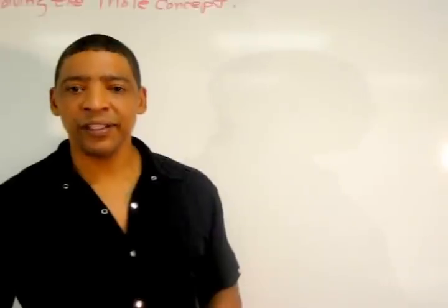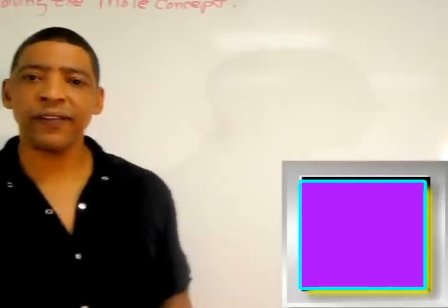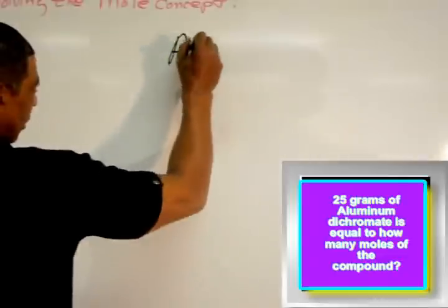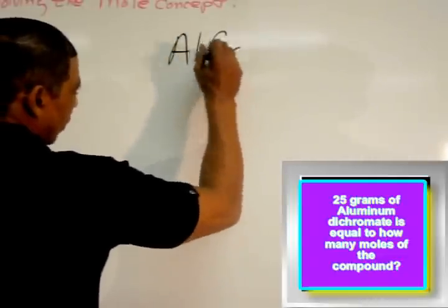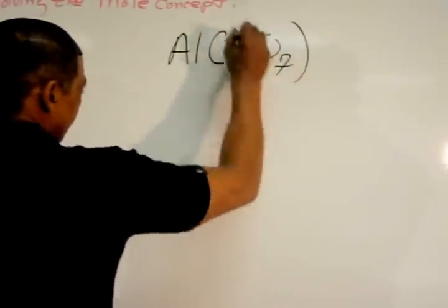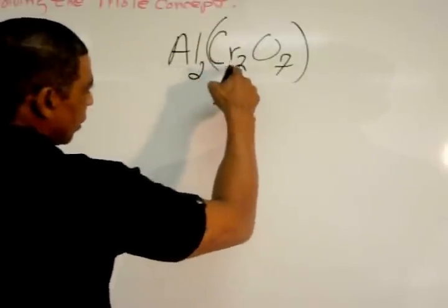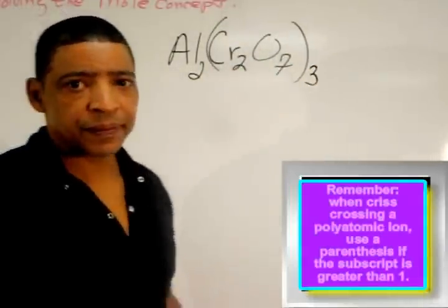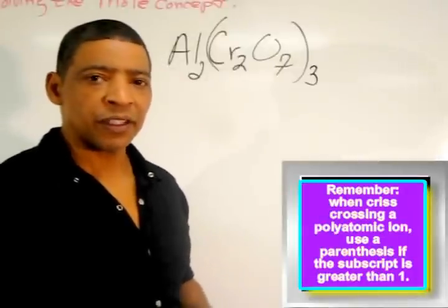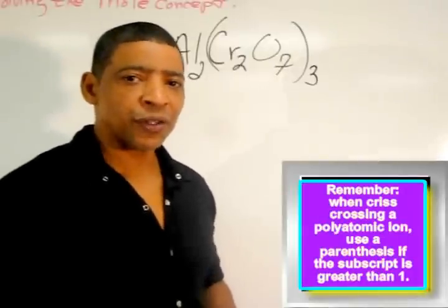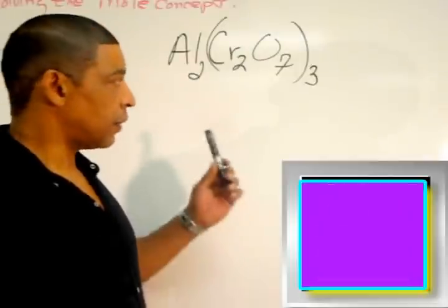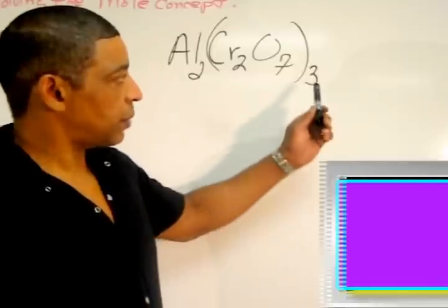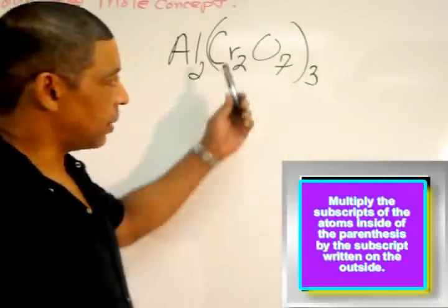Now let's determine the number of moles contained in 25 grams of aluminum dichromate. The formula for aluminum dichromate is Al2(Cr2O7)3. In order to properly manipulate the mole calculation, one must first understand how to count atoms in a formula. The easiest way to count the number of atoms in this formula is to simply distribute the 3 to each element within the parentheses.